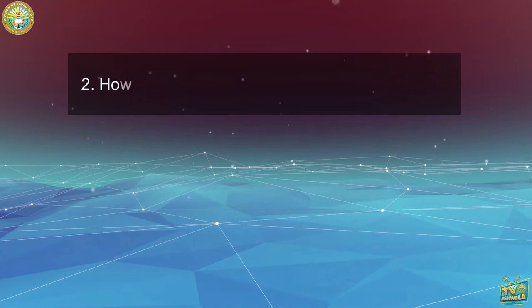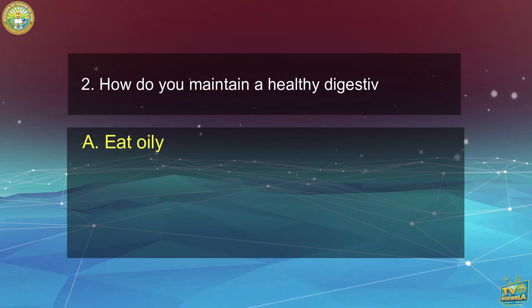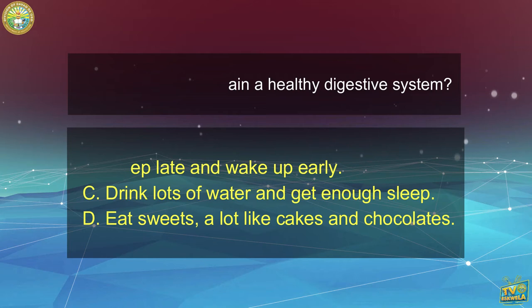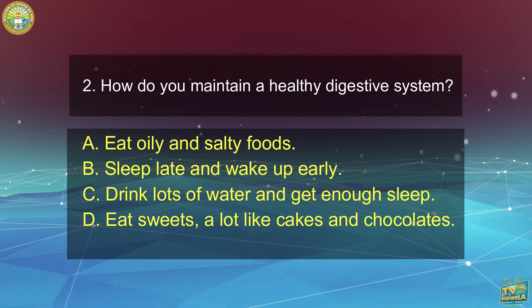Number 2: How do you maintain a healthy digestive system? A. Eat oily and salty foods. B. Sleep late and wake up early. C. Drink lots of water and get enough sleep. D. Eat sweets a lot like cakes and chocolates. The correct answer is letter C — drink lots of water and get enough sleep.